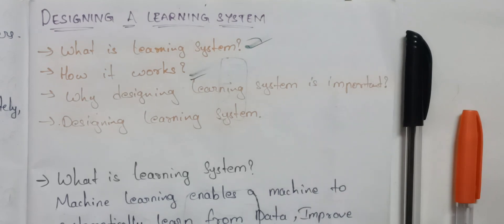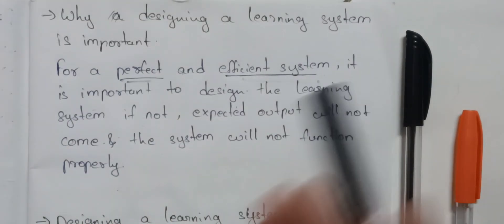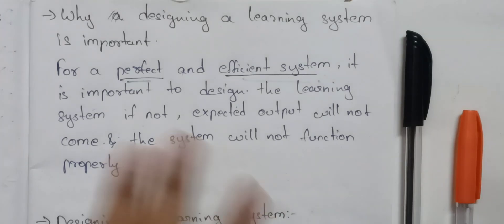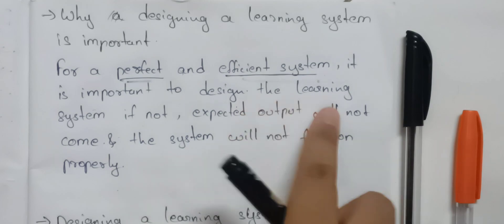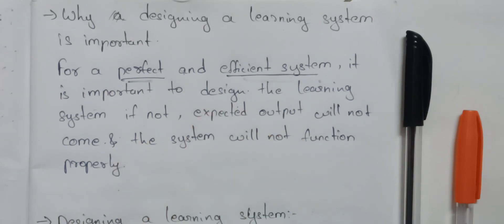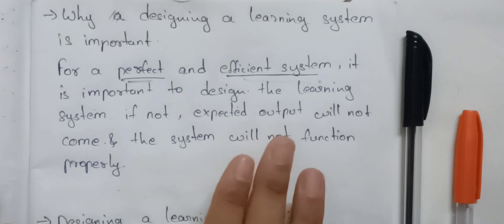Next, why is designing a learning system important? A learning system is designed for a perfect and efficient system. If we have a proper design, we can achieve the expected results accordingly. If our learning system is good and properly designed, we get proper output. If not, the expected output will not come and the system will not function properly.